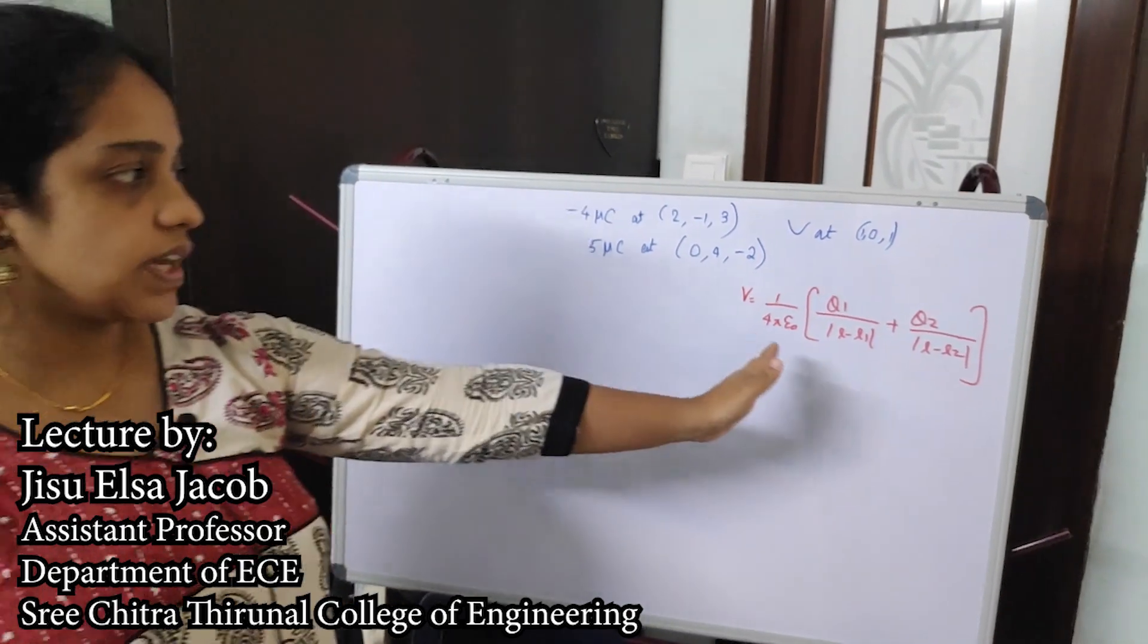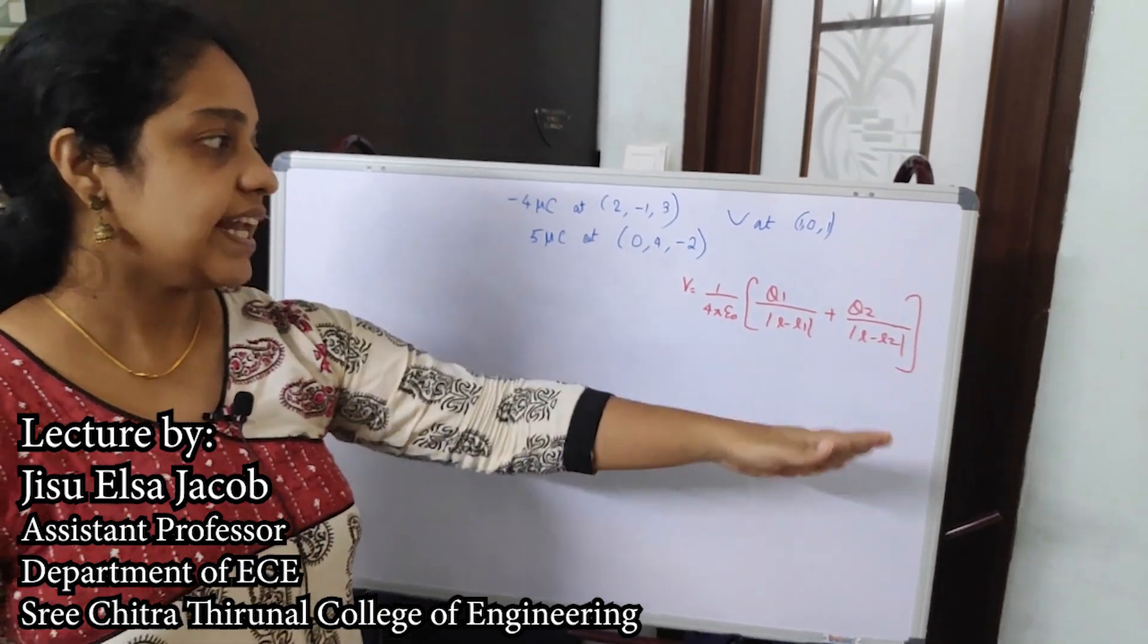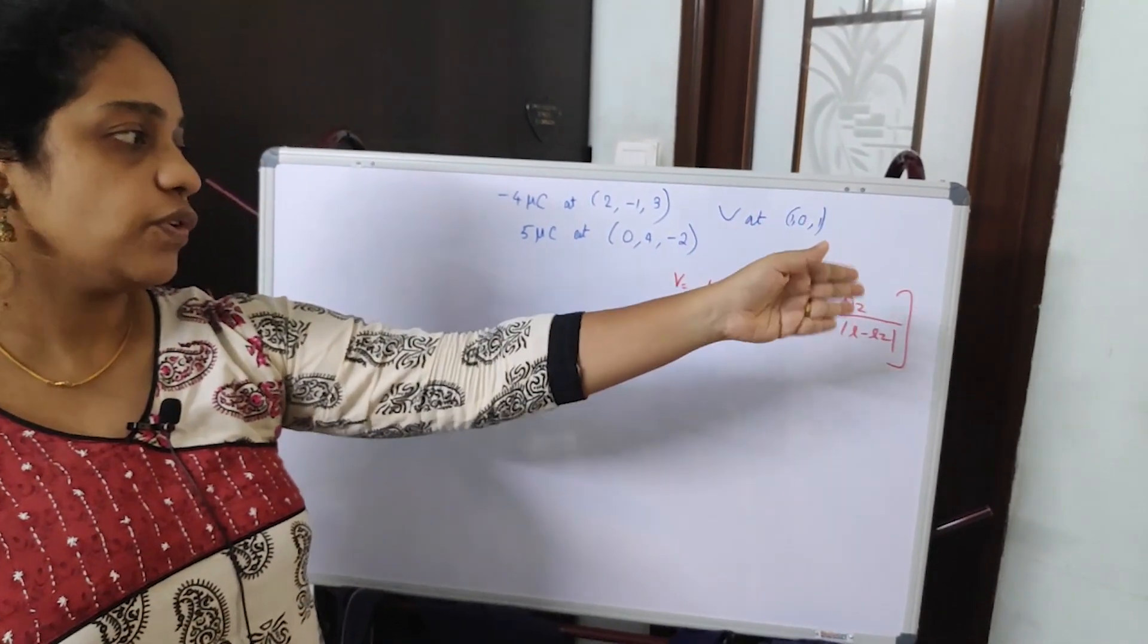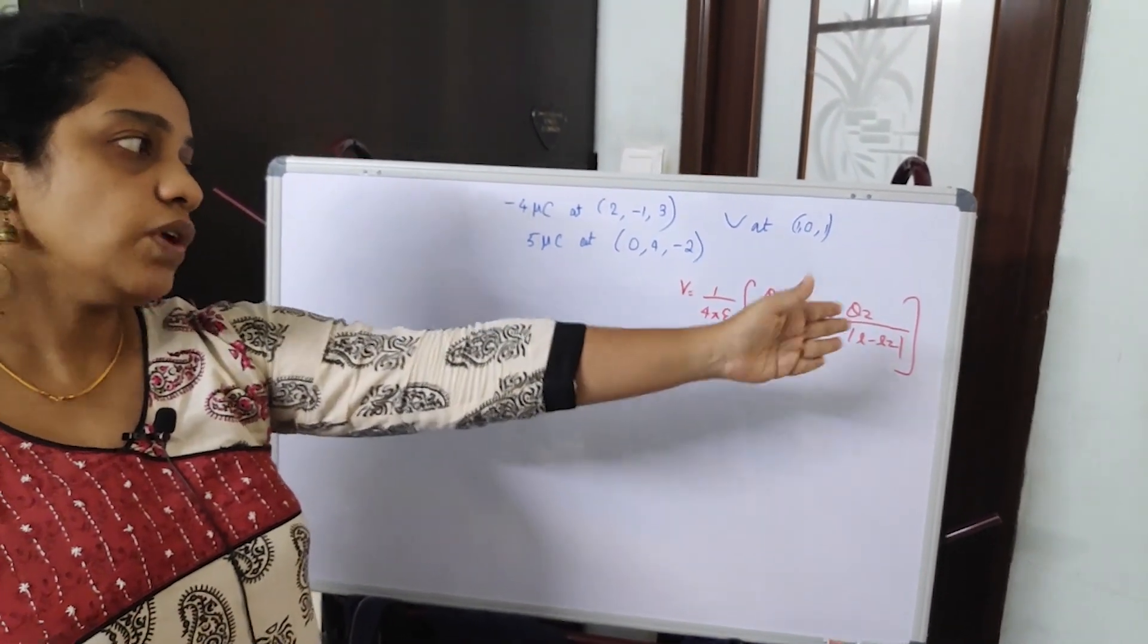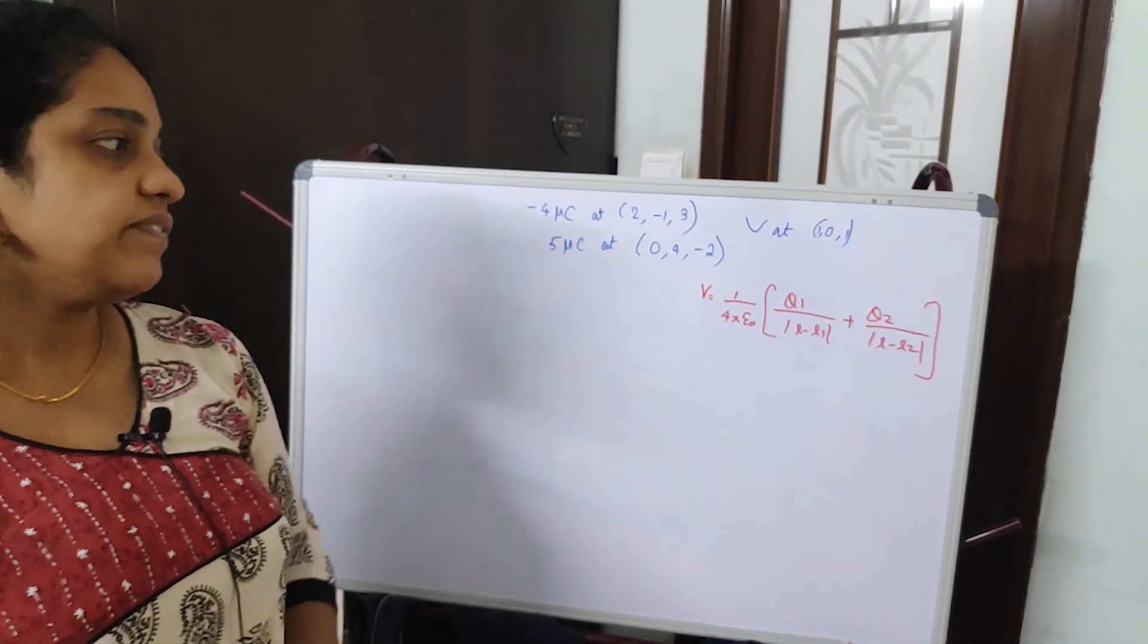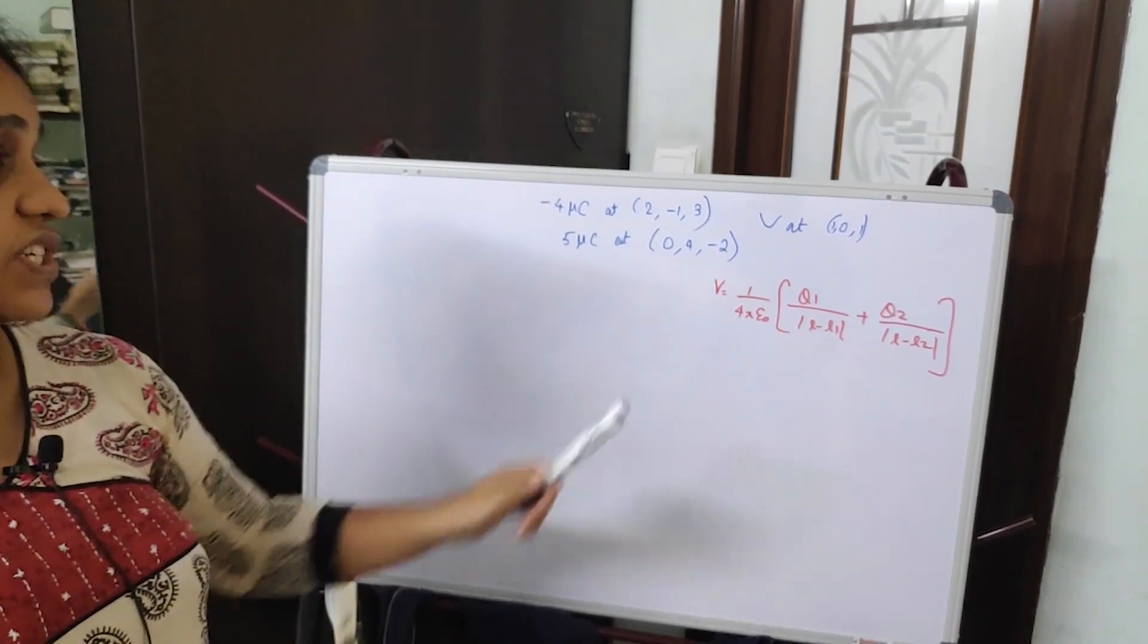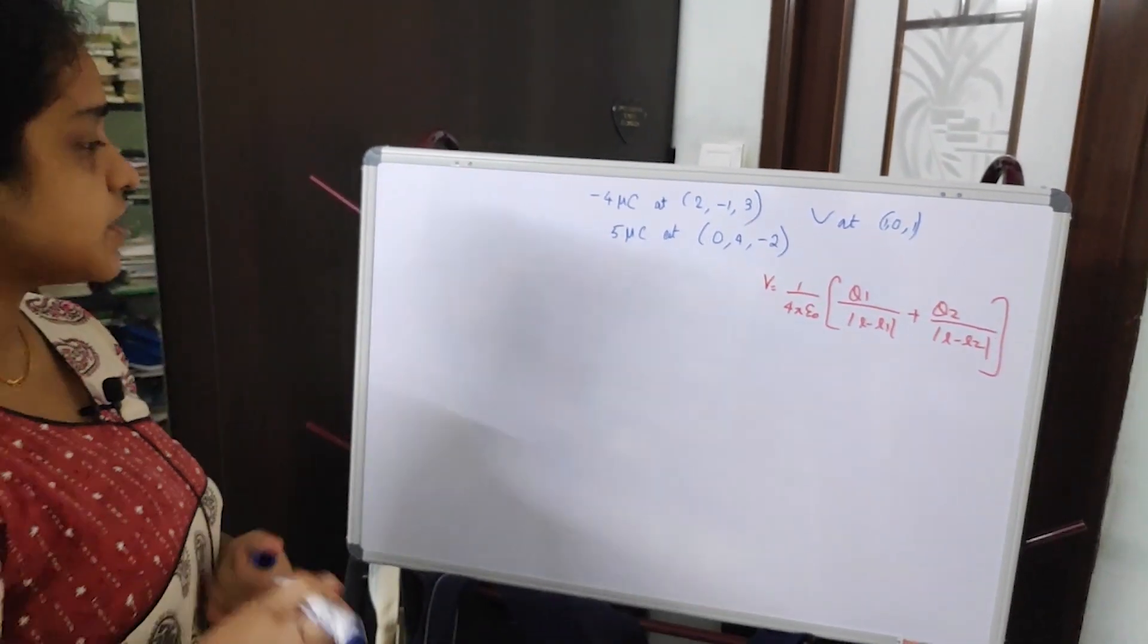If there are n charges, you can go on adding like q3 divided by vector r minus r3 plus q4 divided by vector r minus r4 up to qn divided by vector r minus r1. You can see that all these are just magnitudes and electric potential v is a scalar quantity.